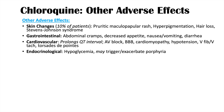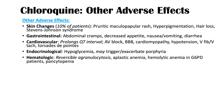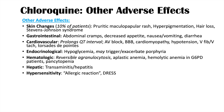With regards to endocrinological adverse effects, we can see hypoglycemia — low blood sugar — and this may also trigger or exacerbate porphyria. Hematologic adverse effects include a reversible agranulocytosis where granulocytes are depleted, aplastic anemia, hemolytic anemia especially in individuals with glucose-6-phosphate dehydrogenase deficiency, and pancytopenia. There are also hepatic adverse effects including transaminitis and hepatitis. Hypersensitivity reactions can occur, including drug reaction with eosinophilia and systemic symptoms.